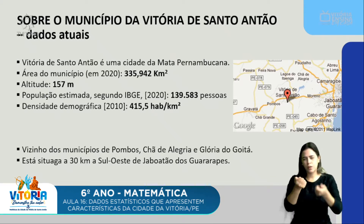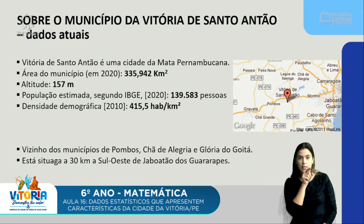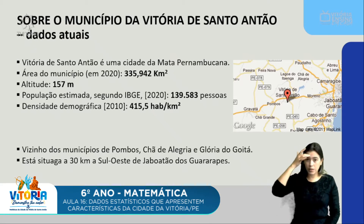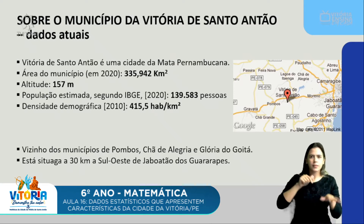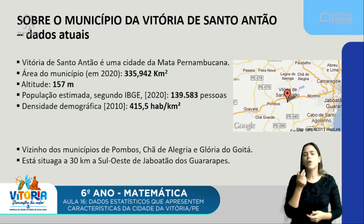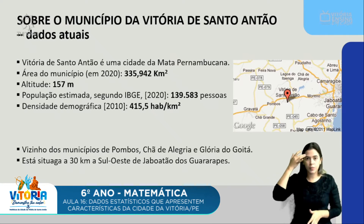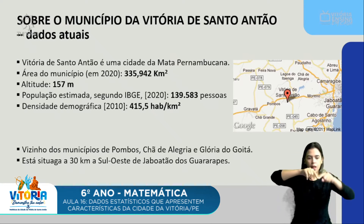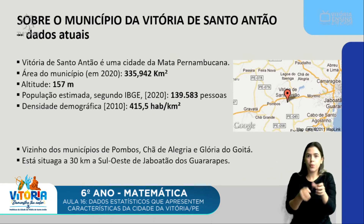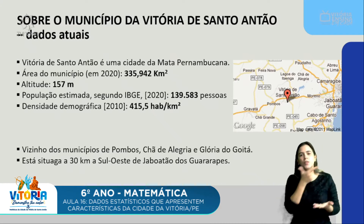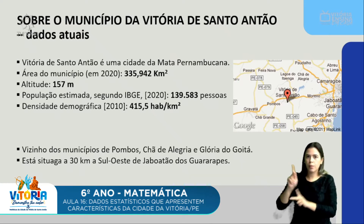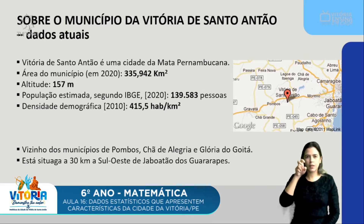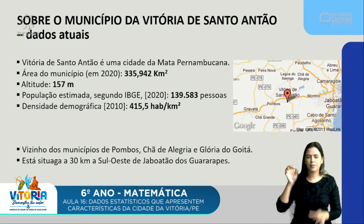O que dá uma densidade demográfica em 2020 de 415,5 habitantes por quilômetro quadrado. Na aula passada, nós trouxemos outros dados da Vitória e um dos conceitos que a gente trabalhou foi esse, de densidade demográfica, que é a quantidade de pessoas que reside em uma região, em uma certa área. Então, a partir da área do município e da população, nós chegamos àquele valor de 415,5 habitantes por quilômetro quadrado.